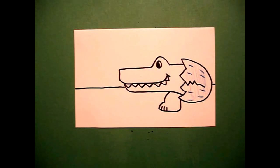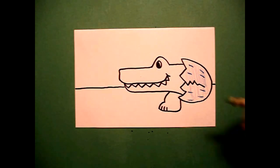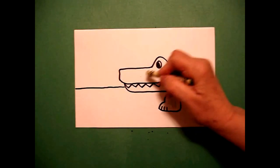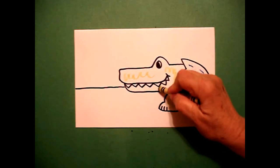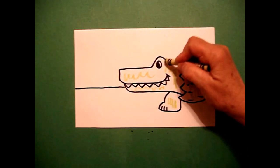I'm going to take yellow green and color my baby alligator all yellow green. You can use dark green if you want, doesn't matter.